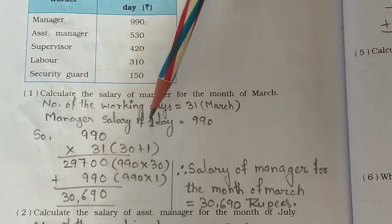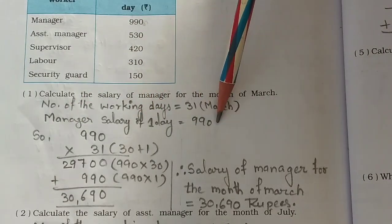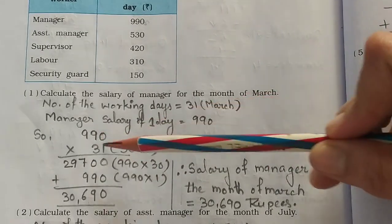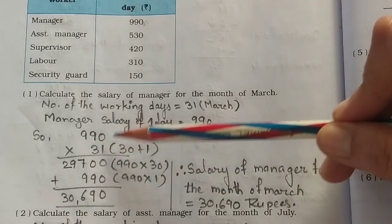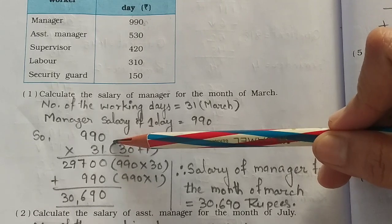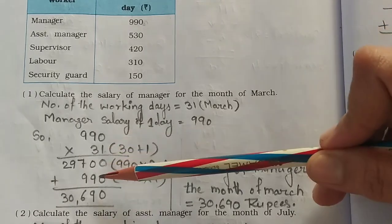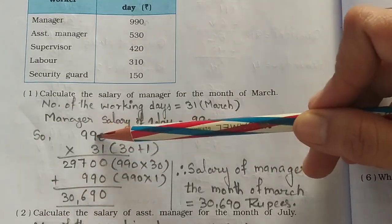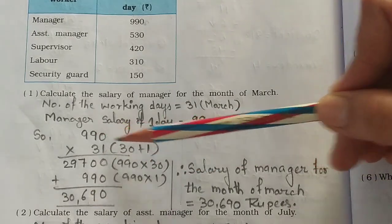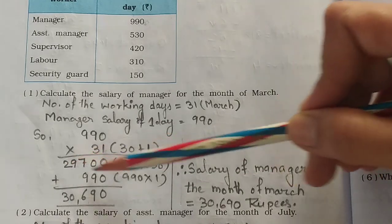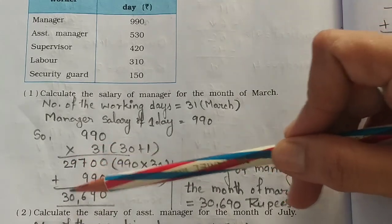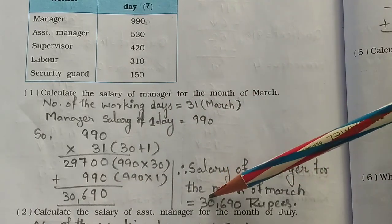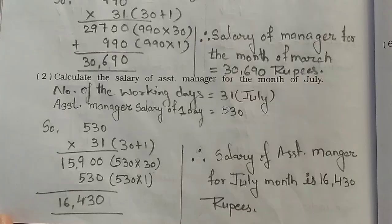So we multiply the manager's salary by the days of March: 990 × 31. Breaking it down: 990 × 30 = 29,700, and 990 × 1 = 990. Adding these gives 30,690. Therefore, the salary of the manager for the month of March is 30,690 rupees.